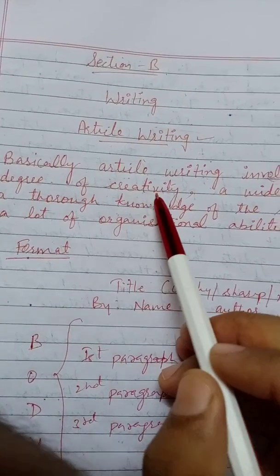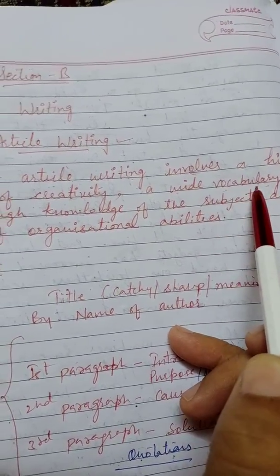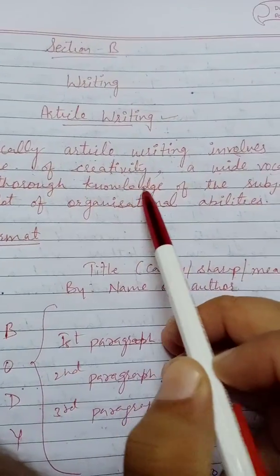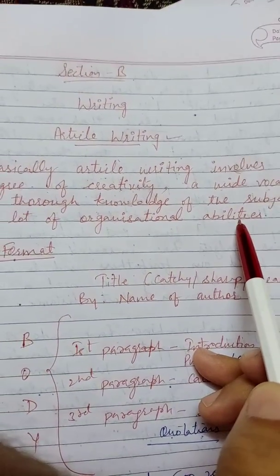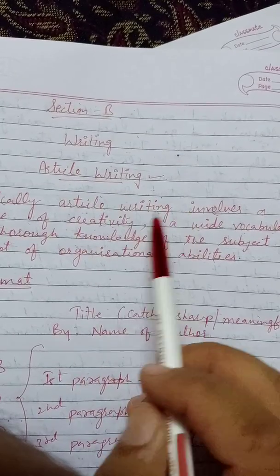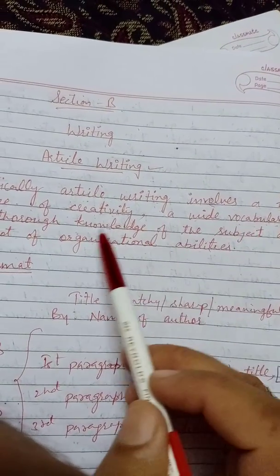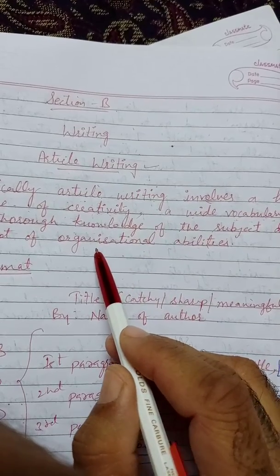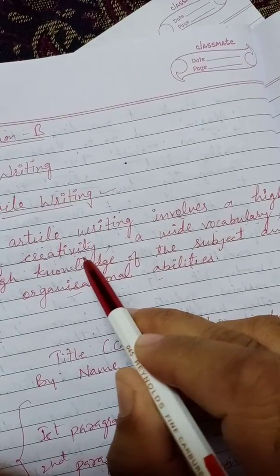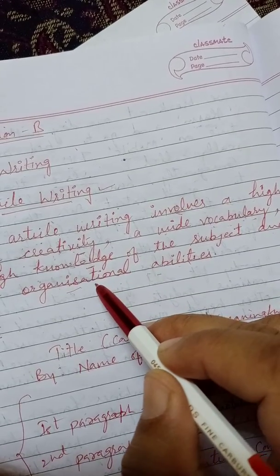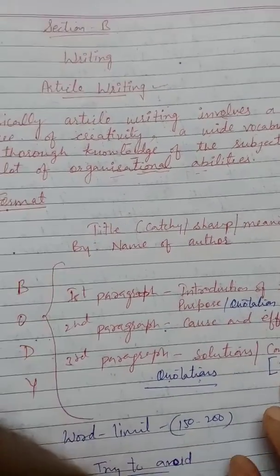An article involves a high degree of creativity, a wide vocabulary, a strong word bank, thorough knowledge of the subject, and a lot of organizational ability. It involves creativity, knowledge of the subject, and the skill to sequence and organize things in proper order. That is called article writing.